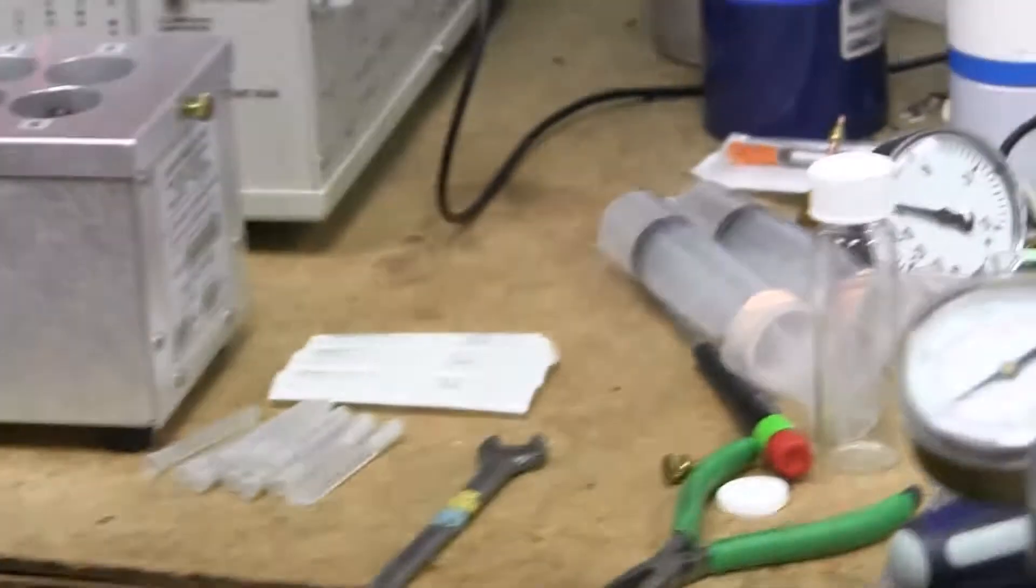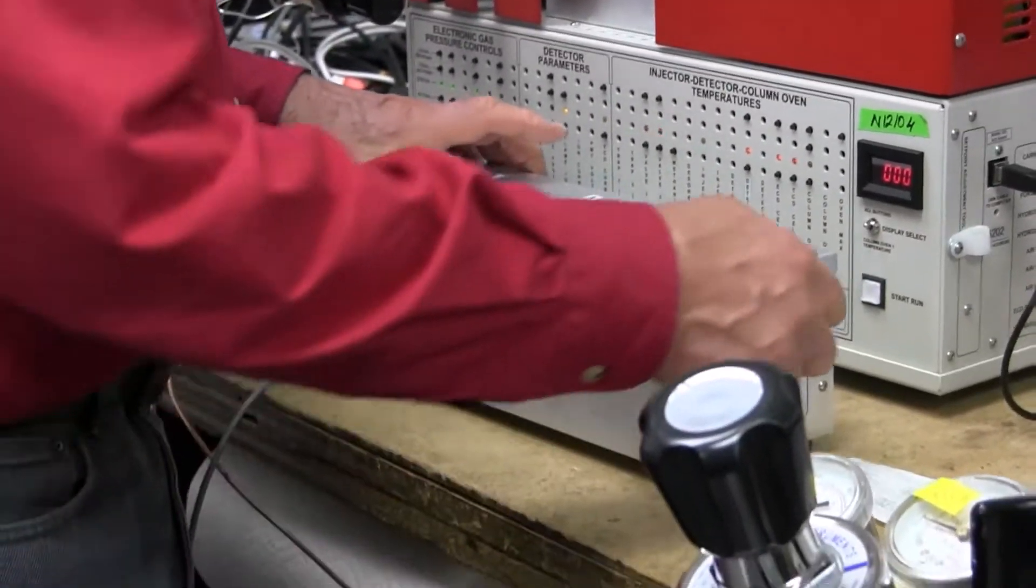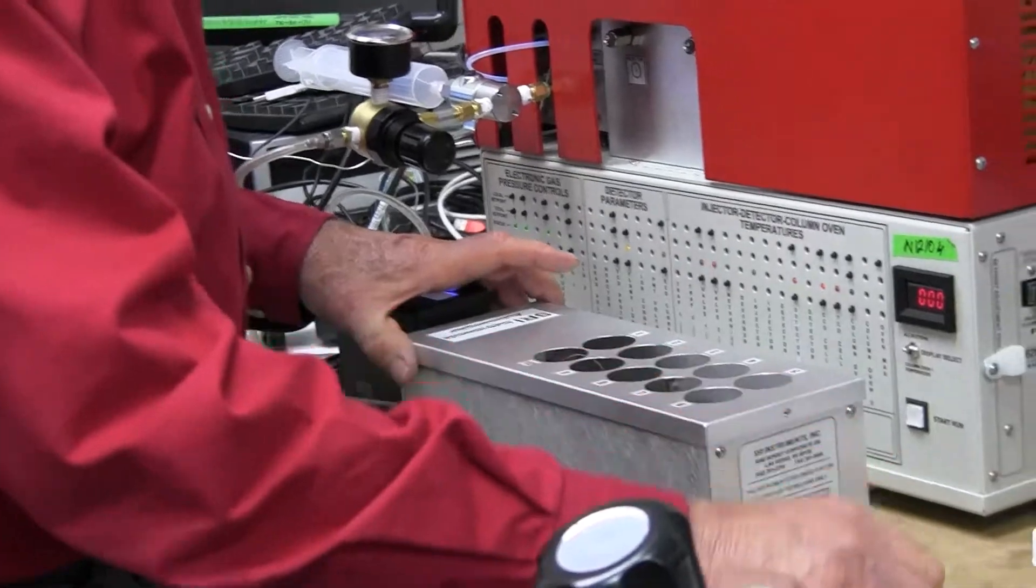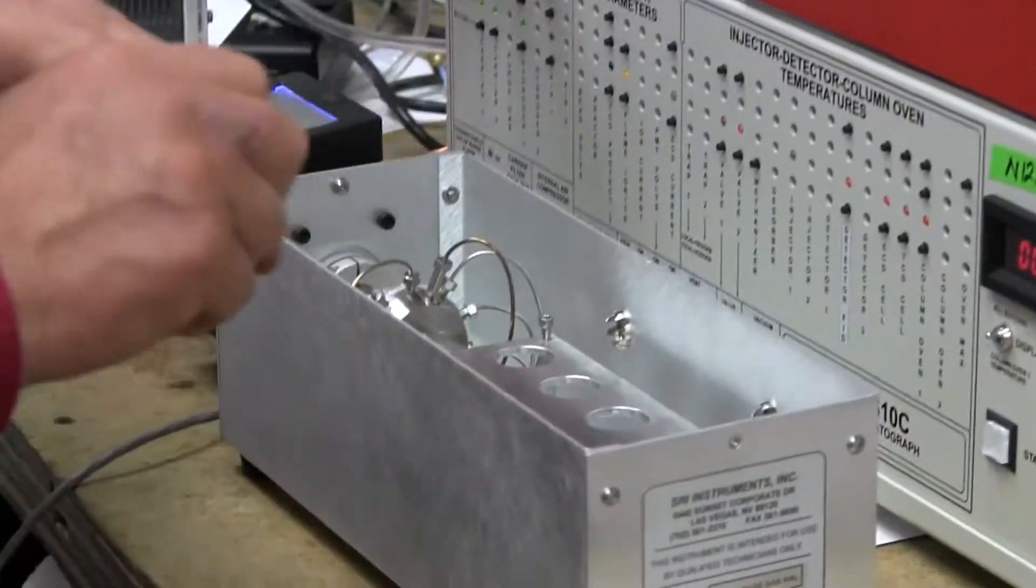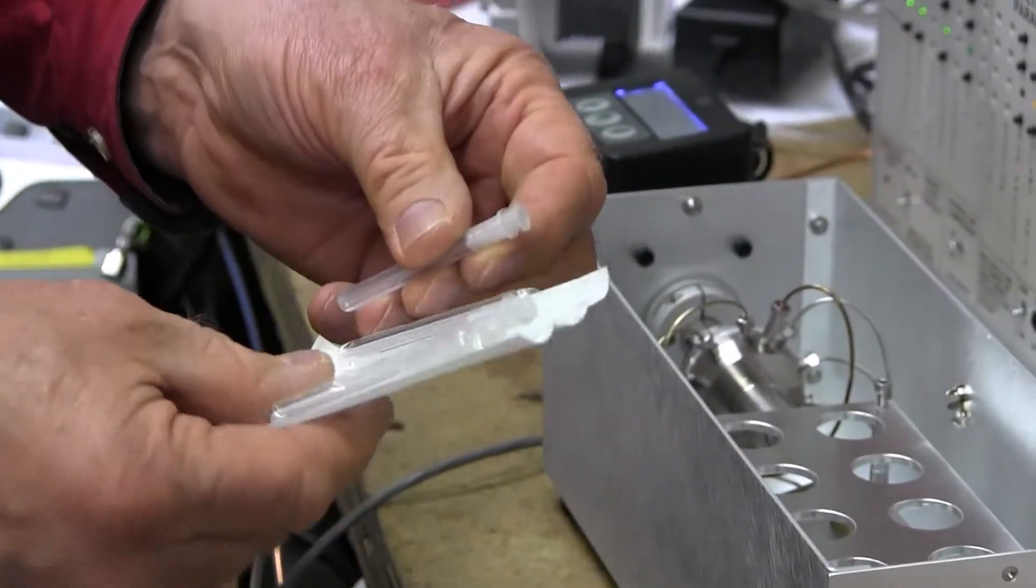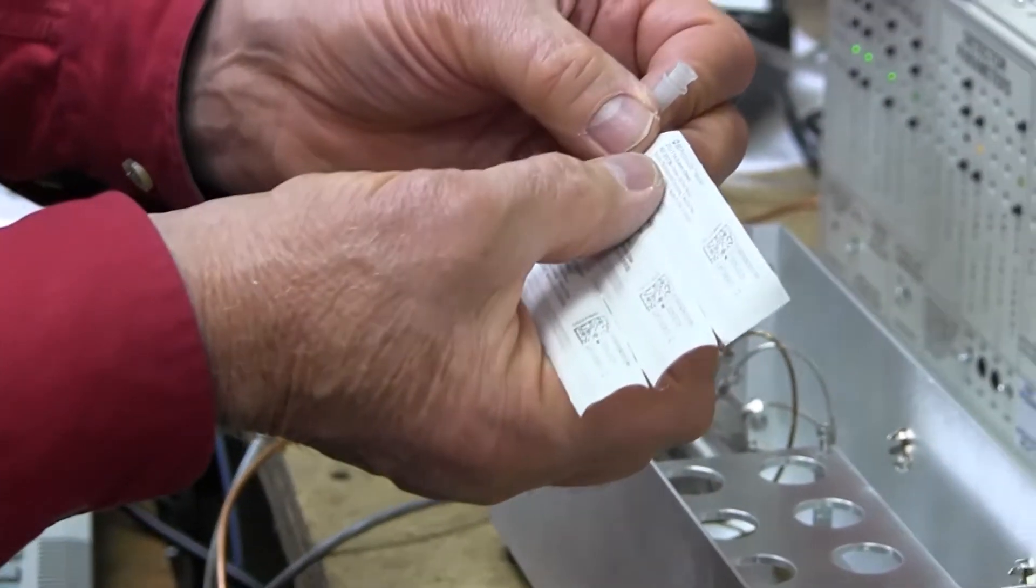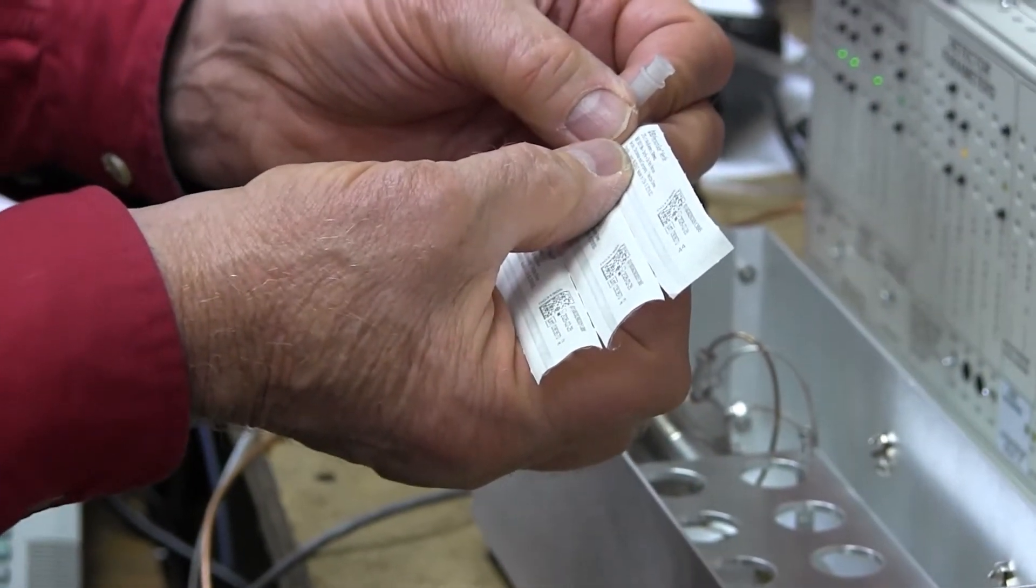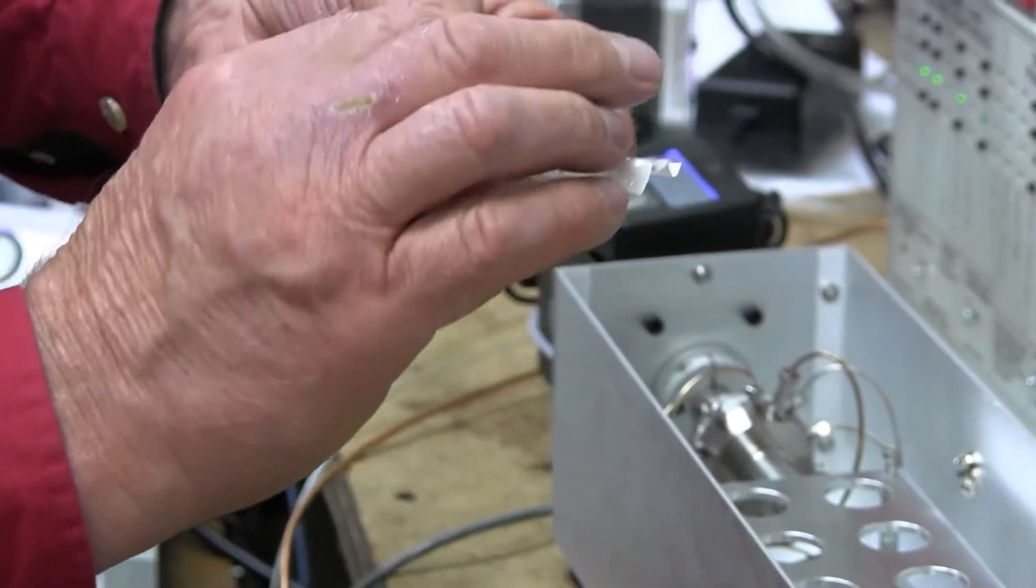Now, we ship it without the syringe needles installed just for safety reasons. So to install the needles, we take the top off, and then these syringe needles, we're using 27-gauge, 1-1/4-inch syringe needles. There's the BD part number, but it's 1-1/4-inch long, and these are about 20 cents each.